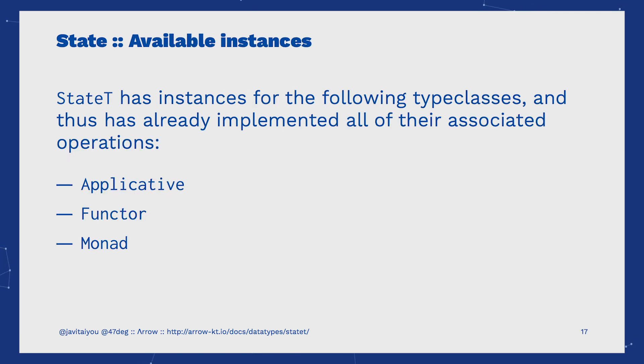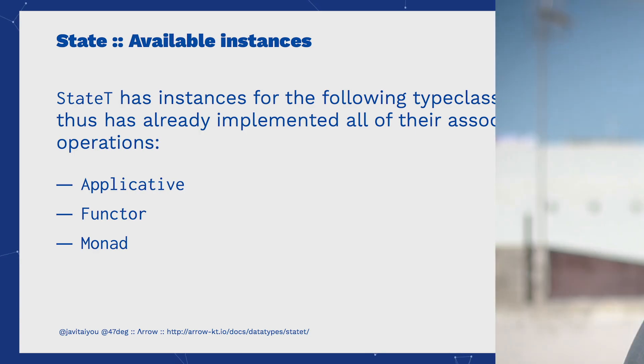StateT has instances for the following type classes, allowing us to use all their associated operations: Applicative, Functor, and Monad. Today we've learned about the StateT data type in Arrow, what it is and how to use it. Arrow comes with several other data types and type classes in order to bring functional programming to Kotlin. You'll be able to learn more in the next videos. Thanks for watching.